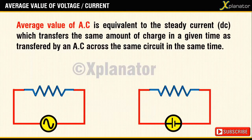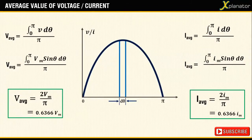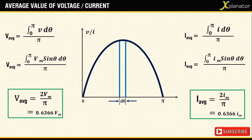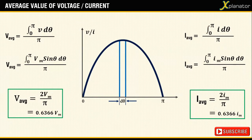If you have studied any derivation on this, it looks like this and the end result reads 2 by pi or 0.6366 times Vm or Im, depends on the derivation.